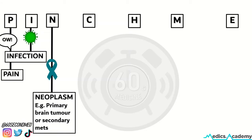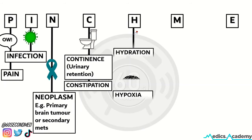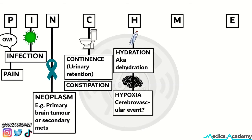N is for neoplasm, thinking about both a primary brain tumor or secondary mets to the brain. C is for continence and constipation, both important causes of delirium. H is for hydration — in this case dehydration — and also hypoxia. Could a cerebrovascular event be the reason behind the patient's confused state?